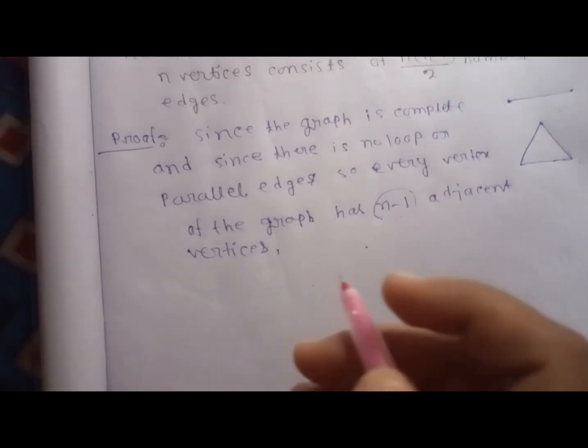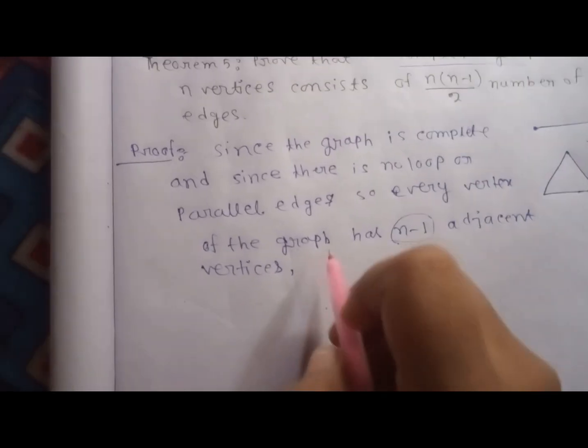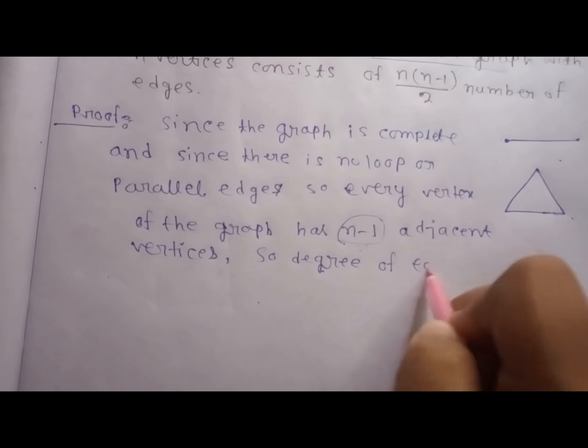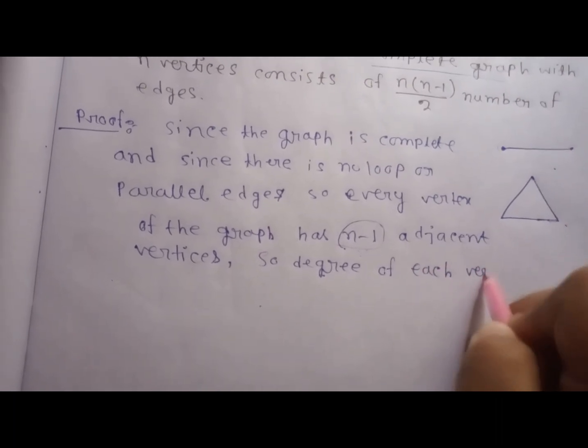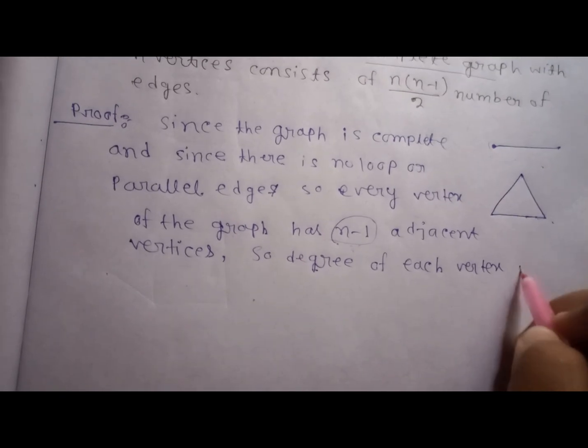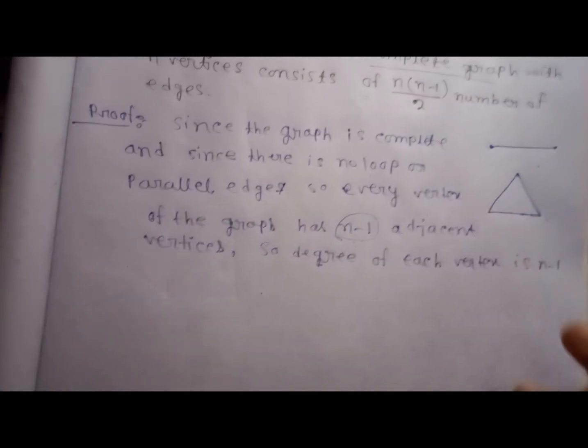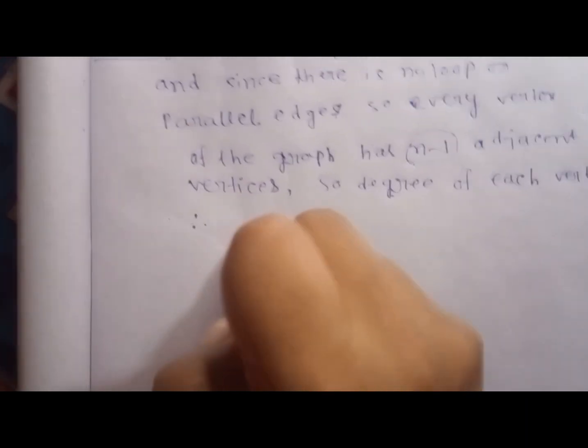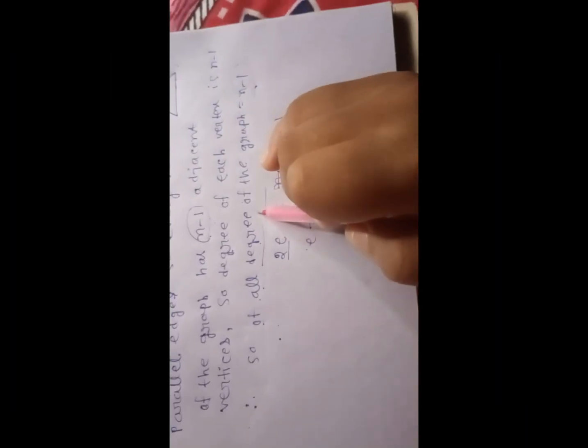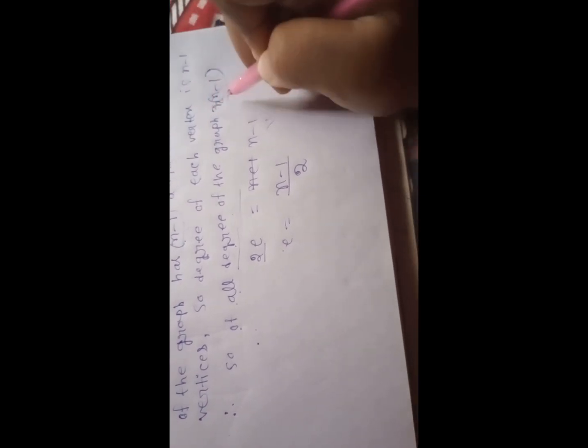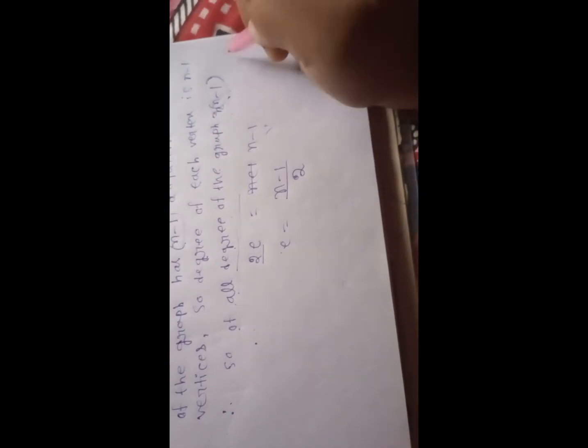So degree of each vertex is n minus 1. Sum of all degrees of the graph is equal to n into n minus 1.